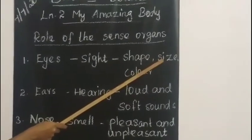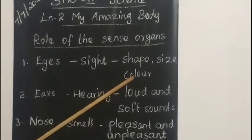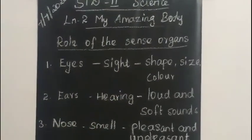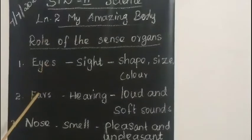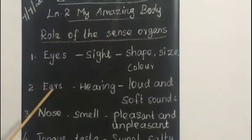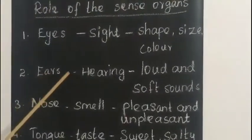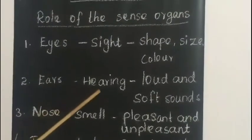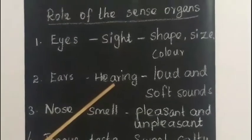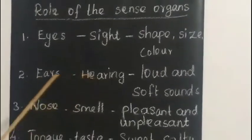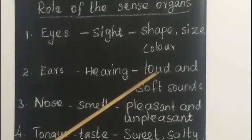Sight means color. We can see colors with our eyes. Next, we can hear with our ears — the role of the ears is hearing.